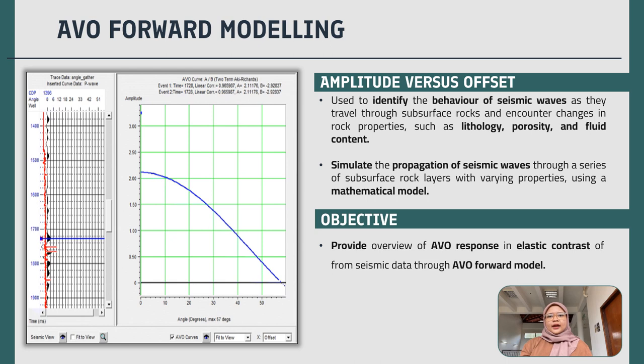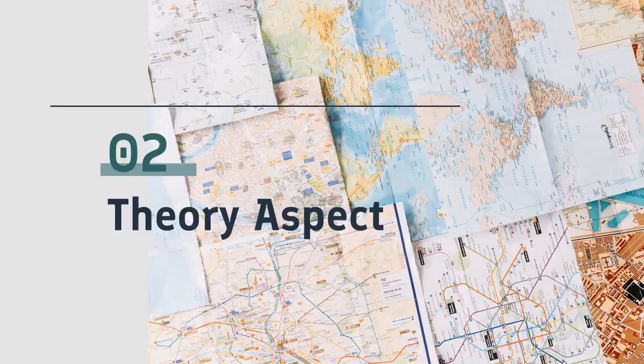For AVO forward modeling, it is used to identify the behavior of seismic waves as they travel through subsurface rock and encounter changes in rock properties such as lithology, porosity, and fluid content. The idea behind this technique is to simulate the propagation of seismic waves through a series of subsurface rock layers with varying properties using mathematical models, providing an overview of the AVO response from elastic contrasts in seismic data.